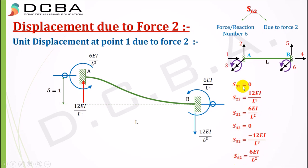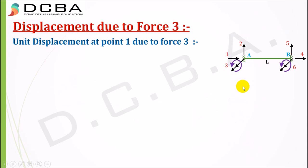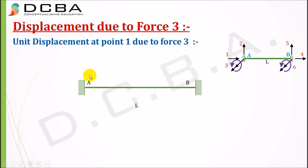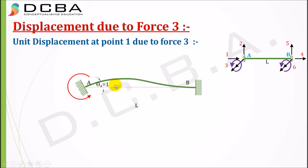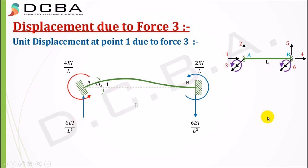Now displacement due to force 3: force 3 is an anticlockwise moment at point 1. Applying a unit rotation (θ = 1) at point 1, the moment causing this rotation is 4EI/L. The reactions formed are: a moment of 2EI/L anticlockwise at point 2, a transverse reaction of 6EI/L² downward at point 1, and 6EI/L² upward at point 2. Axial reactions are zero.